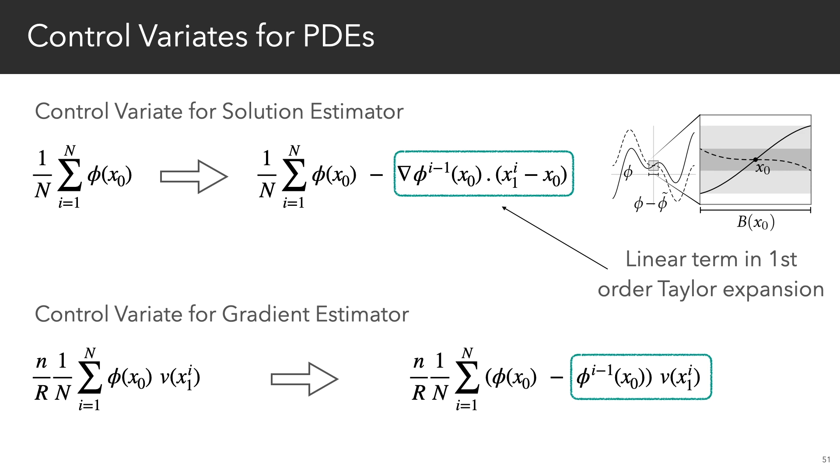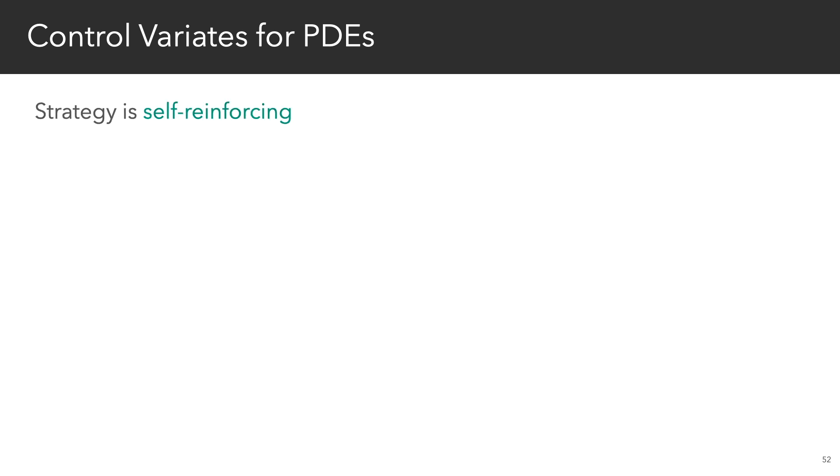Now conveniently, the expected value of these control variates ends up being zero. This strategy is self-reinforcing. So better gradient estimates provide better solution estimates and vice versa.